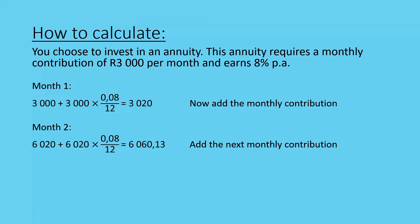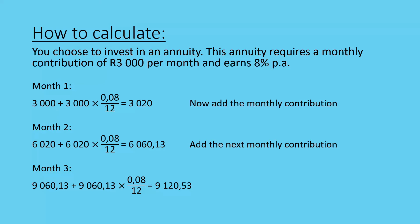We work out the interest on that 6,000, which then gives us 6,060 and 13 cents. And we add the next monthly contribution, which will give us 9,060 and 13 cents. So 9,060 Rand and 13 cents, times 8% over 12, will give me a closing balance of 9,020 Rand and 53 cents. You'll see that our amount grows very quickly and the interest is also growing a lot quicker because we are adding more and more to our annuity.